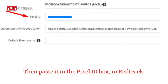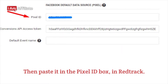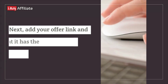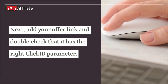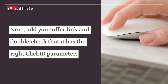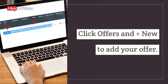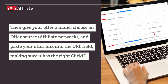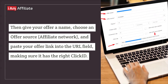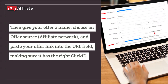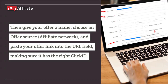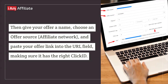Then paste the Pixel ID in the Pixel ID box in RedTrack. Step 3: Add your offer. Next, add your offer link and double-check that it has the right click ID parameter. Click Offers and Plus New to add your offer. Then give your offer a name, choose an offer source and affiliate network, and paste your offer link into the URL field, making sure it has the right click ID.